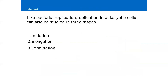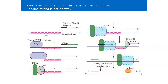The next stage is termination. The termination of replication in eukaryotic cells involves the specialized structures called telomeres at the ends of linear chromosomes. Unlike replication in bacterial genomes, replication in eukaryotes, which have linear chromosomes, poses some problems.